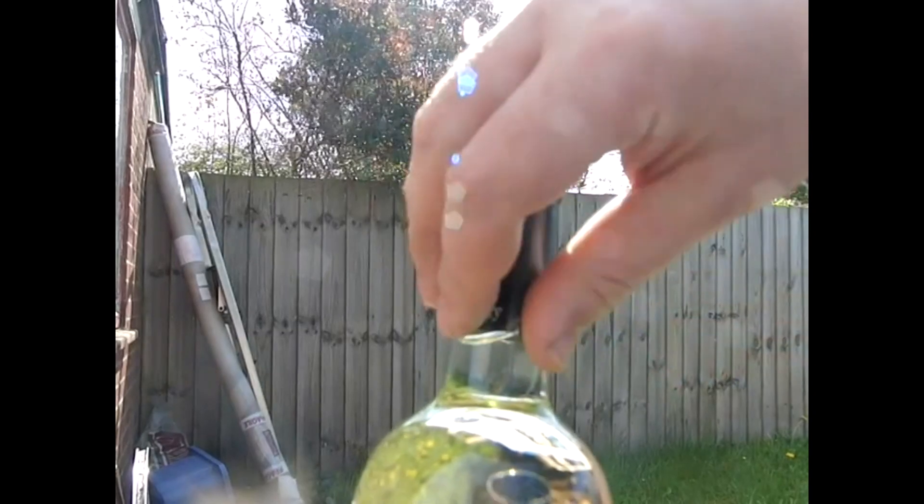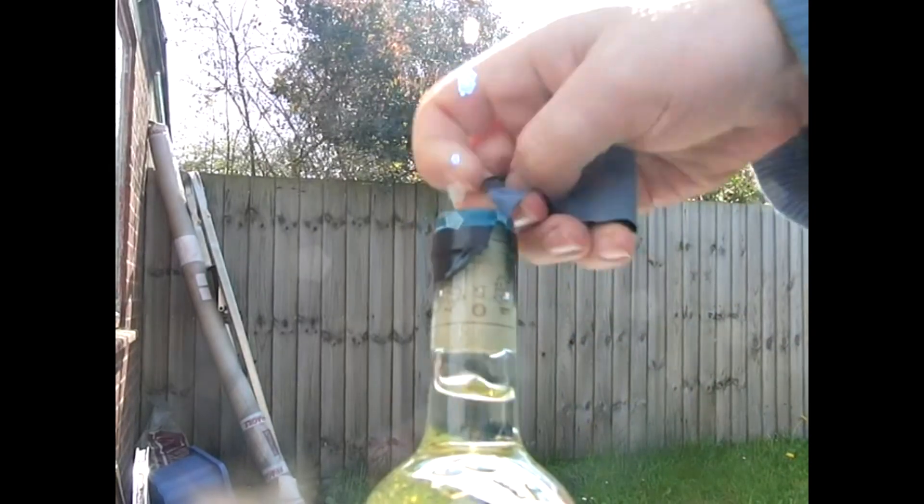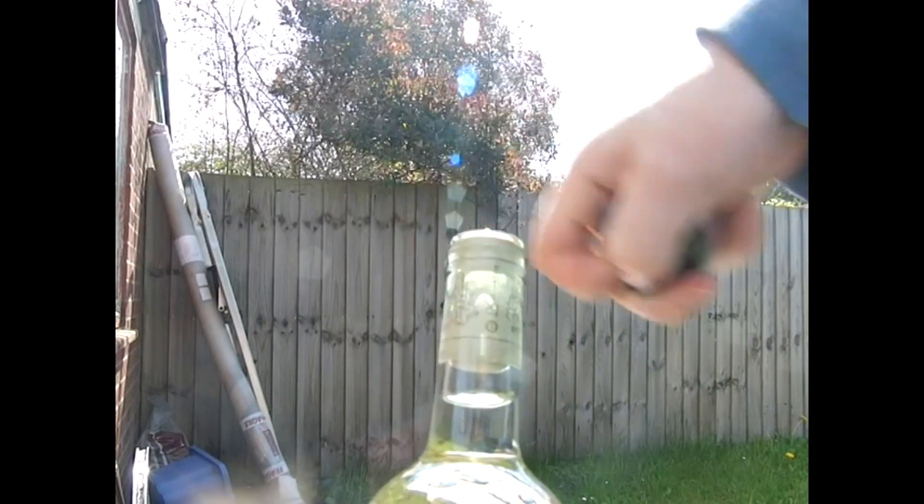The French appear to have come up with a way of opening a wine bottle without a corkscrew at all. The first stage involves taking off the wrapping around the cork, and then the second stage is slightly surprising.